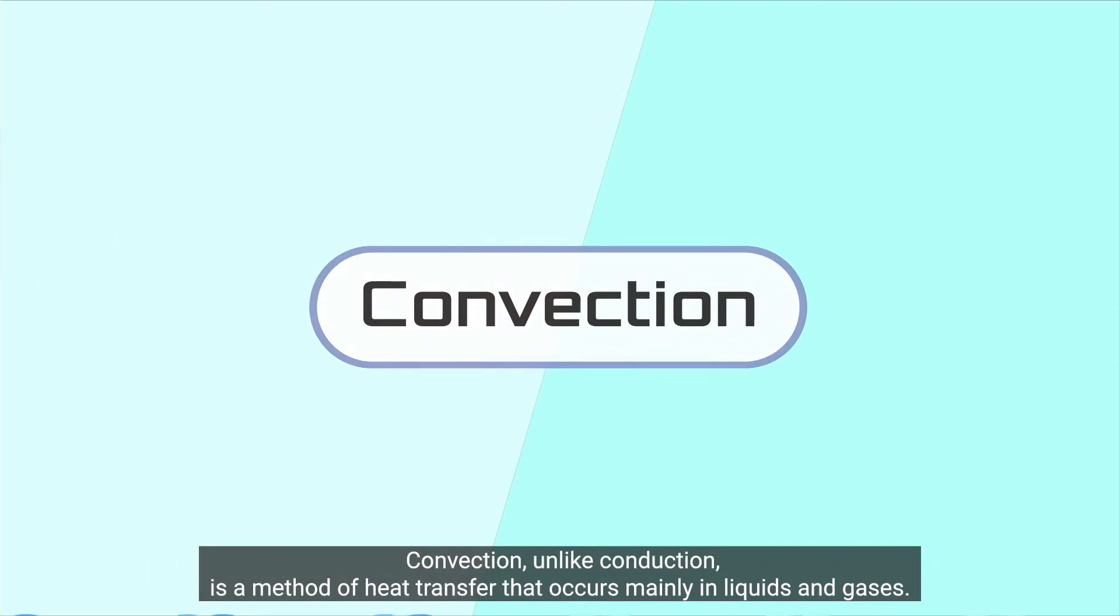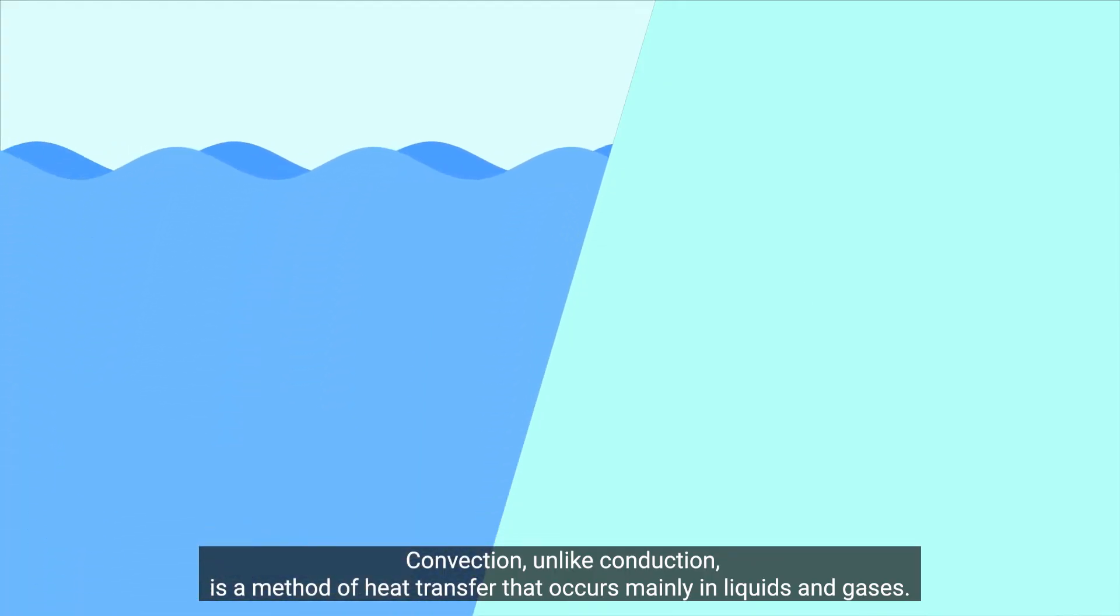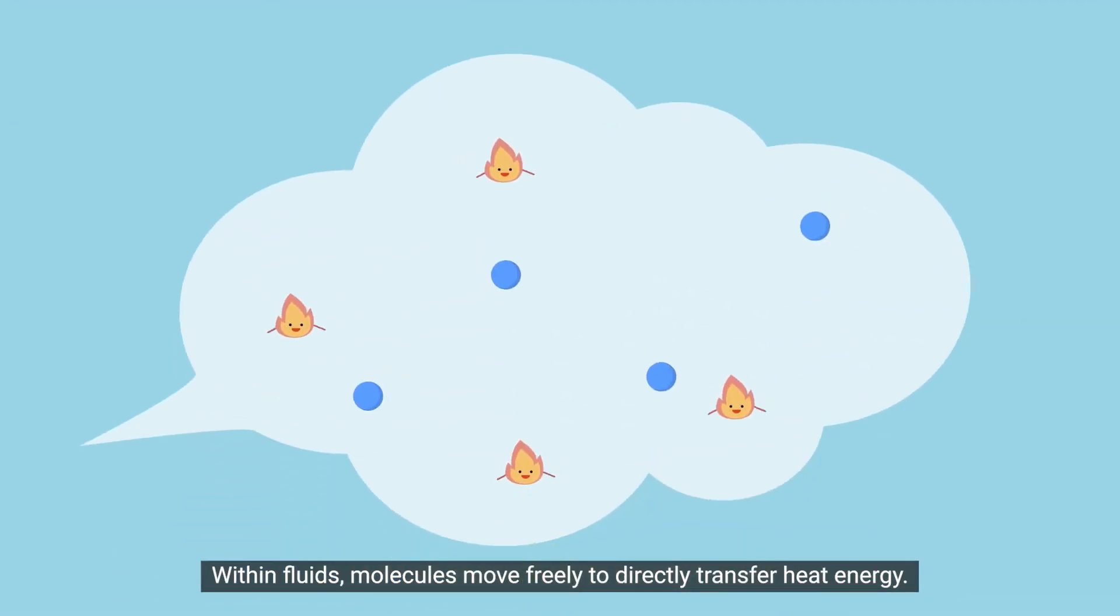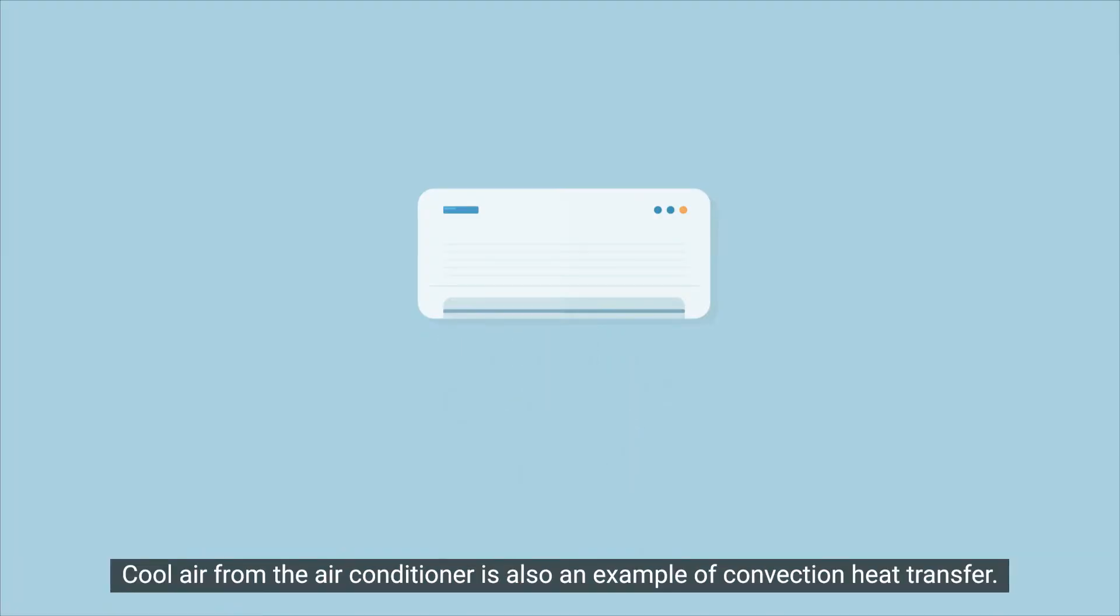Convection, unlike conduction, is a method of heat transfer that occurs mainly in liquids and gases. Within fluids, molecules move freely to directly transfer heat energy. Cool air from the air conditioner is also an example of convection heat transfer.